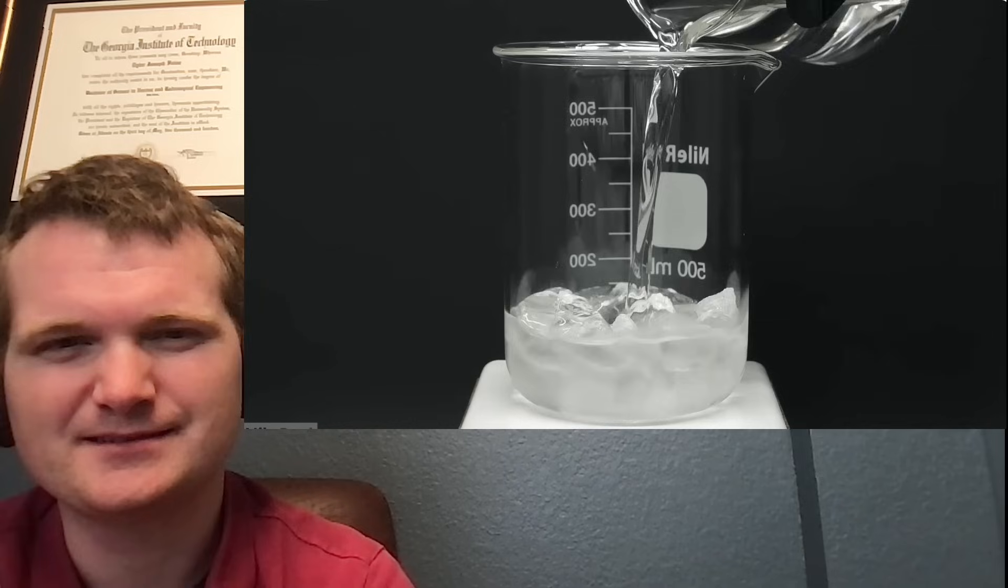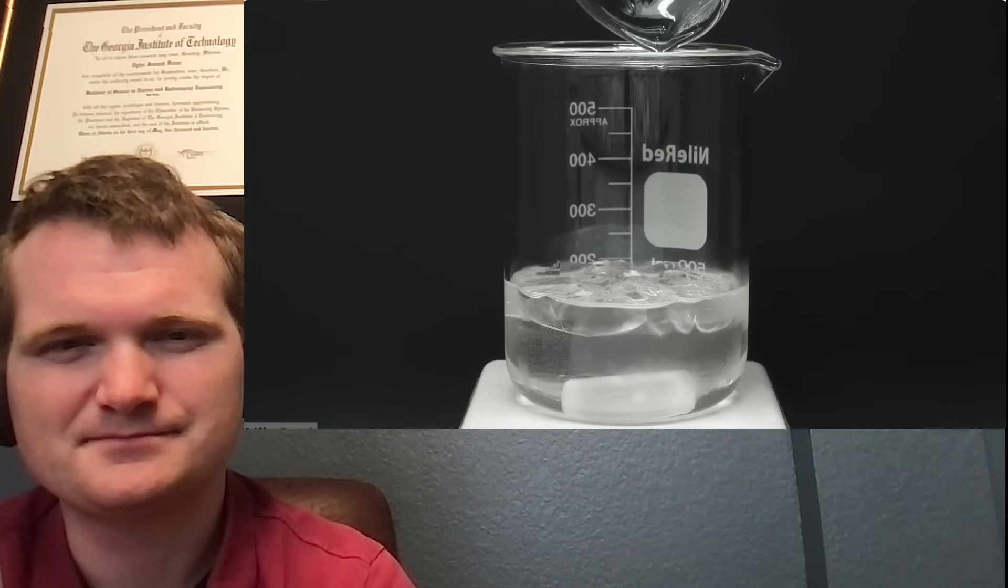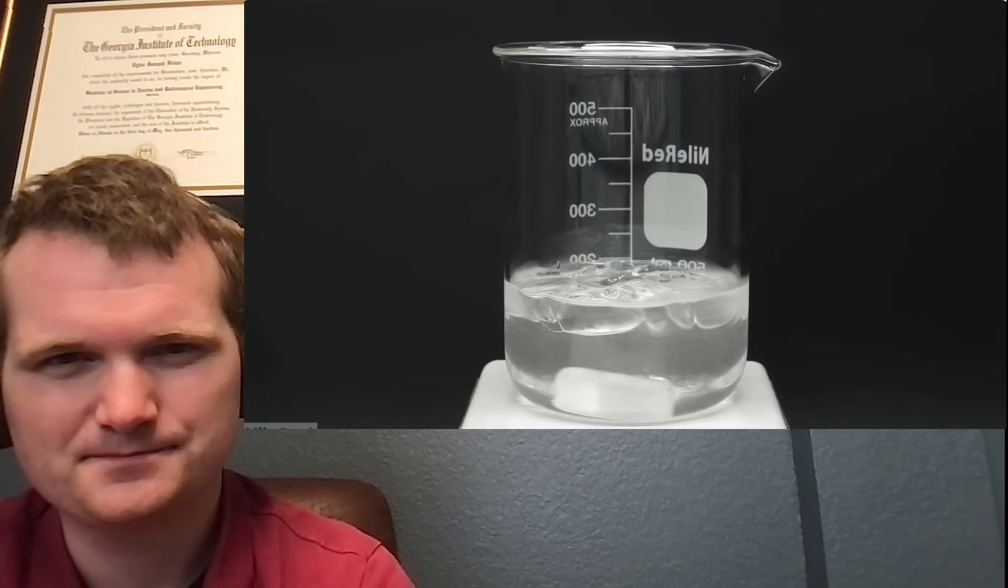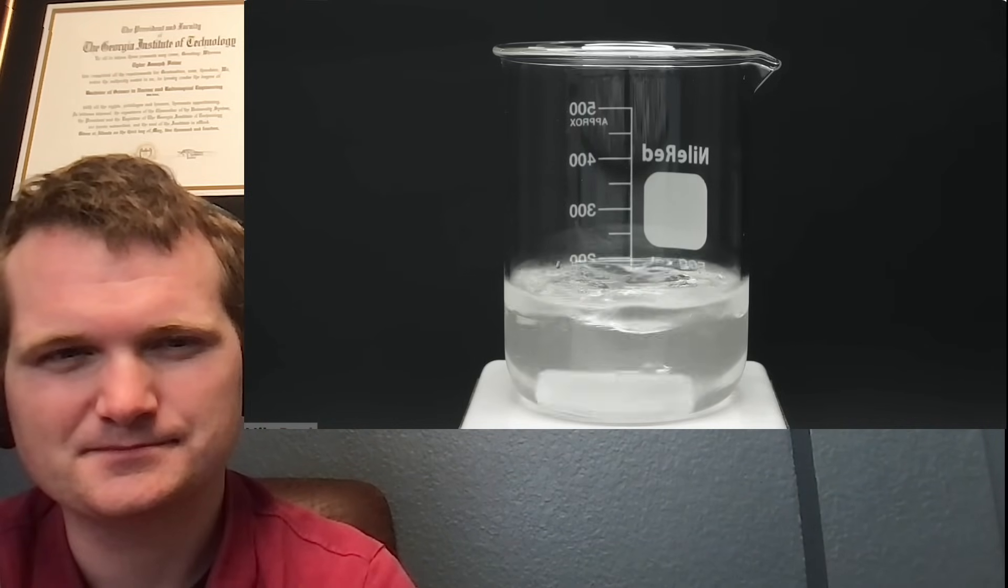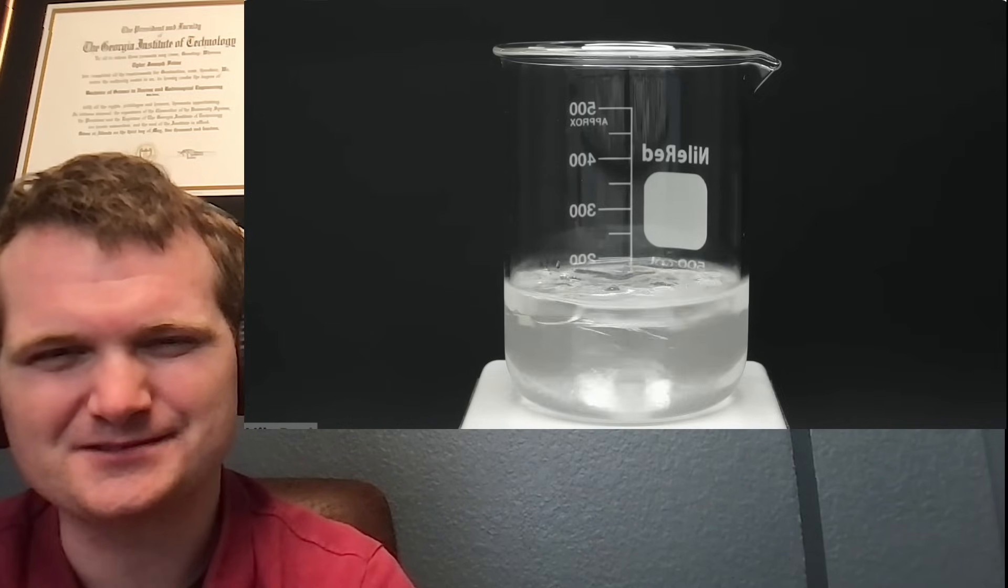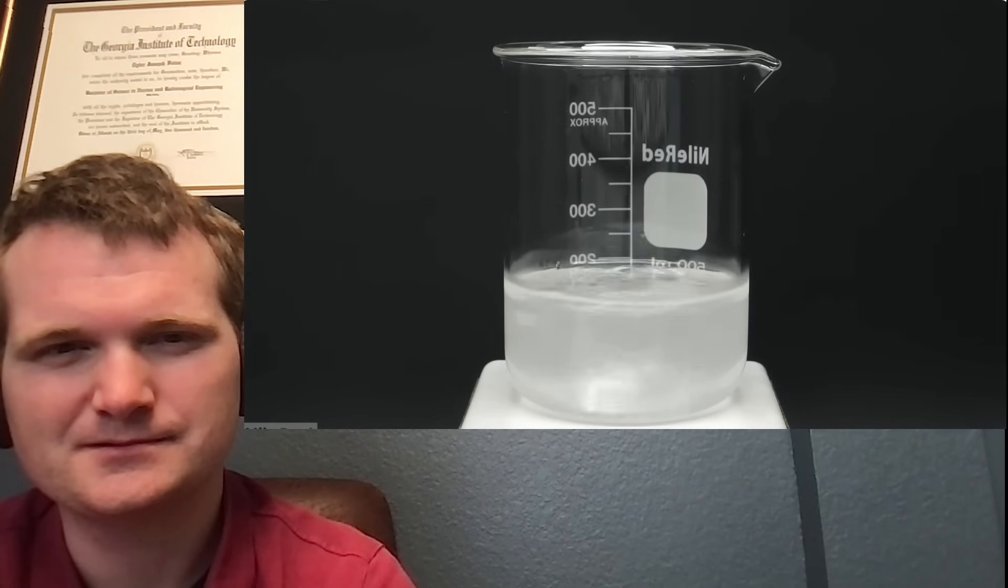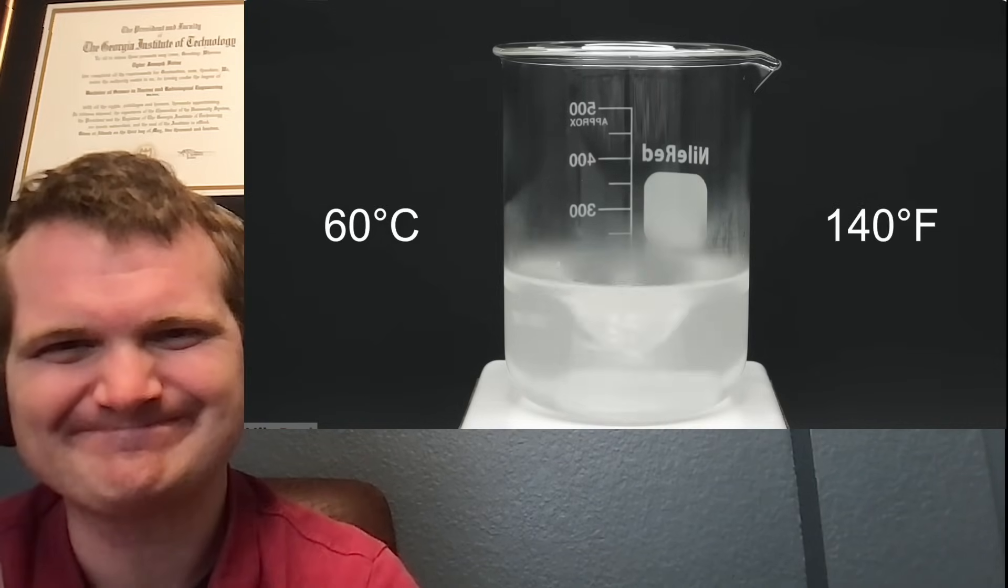This almost immediately caused most of the ice to melt, and when it was all added, I turned on the stirring. What I was doing here was just diluting the sulfuric acid and bringing the concentration down from 98% to 75%. I also used ice to do this because it generated a lot of heat, and the whole solution was now probably around 60 C or 140 Fahrenheit.